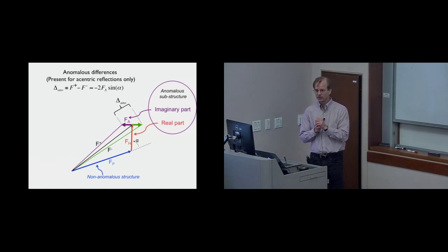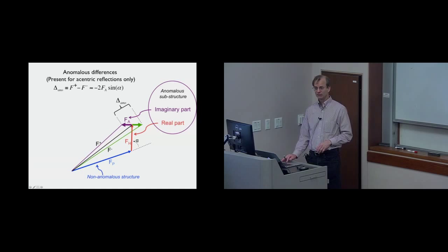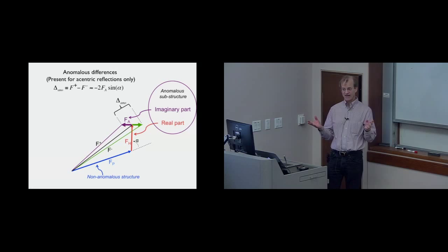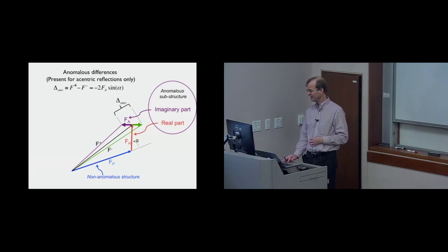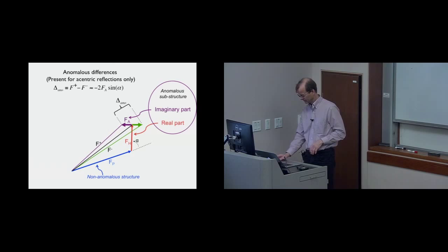If we wanted to calculate a map showing where all the anomalously scattering atoms were located, we'd draw a map using all the little FA structure factors as map coefficients — that map would show exactly where the anomalously scattering atoms are. But we never get a map that good because we don't measure FA directly; we measure the component of FA along the black line, always getting the sine alpha term. So in all our calculations about anomalously scattering atoms, there's always a big intrinsic noise that goes along with it.